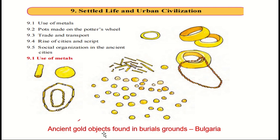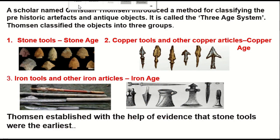You can see some of the ancient gold objects which were found in burial grounds of Bulgaria. A scholar named Christian Thompson introduced a method for classifying prehistoric artifacts and antique objects, called the Three Age system. Artifacts means objects which were made by human beings. Thompson classified the objects into three groups — the first being stone tools, the period in which stone tools were mainly used.